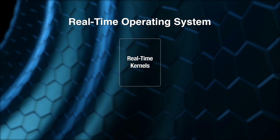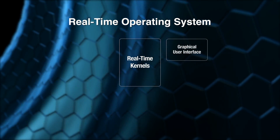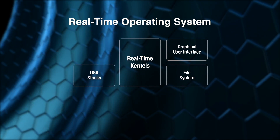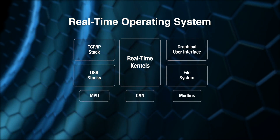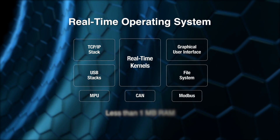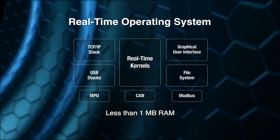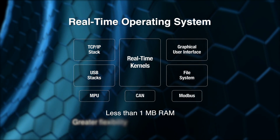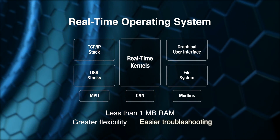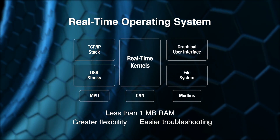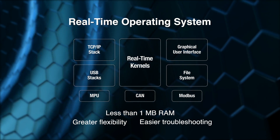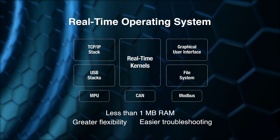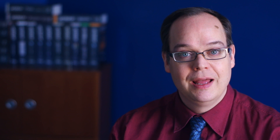A complete RTOS with a kernel, a user interface, a file system, USB support, networking, and more can fit in a memory space of less than one megabyte. With an RTOS, the software architecture of an embedded system can be more flexible. Troubleshooting and adding new features becomes dramatically simplified. It is also simpler to perform firmware upgrades. In short, it just makes sense to use an RTOS with a 32-bit processor.